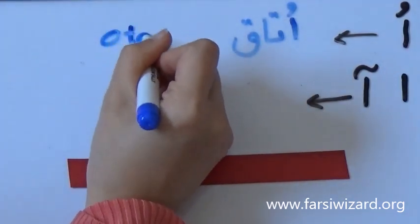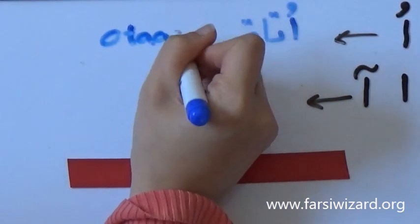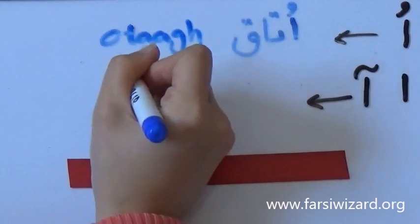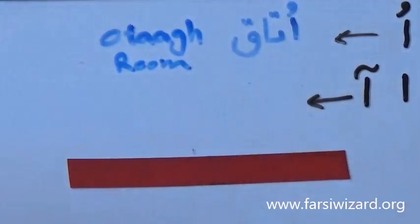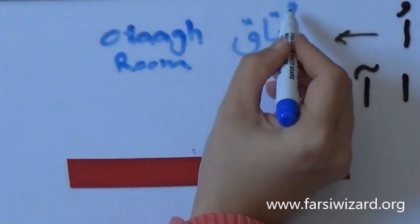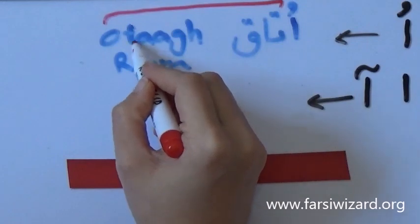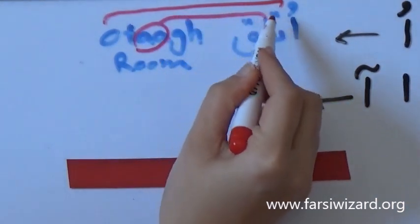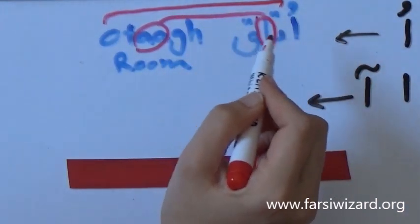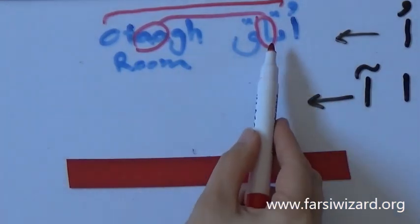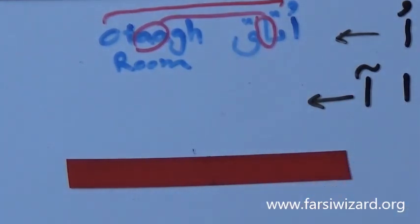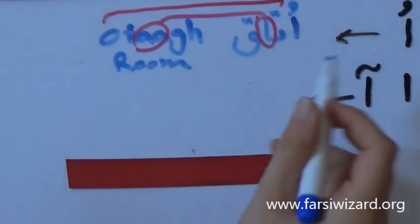The word Otaq means room in English. Now, here you can see that the first letter O has appeared at the beginning of the word. So we have O, and then we have another Aleph in the middle of the word, Otaq. So you see the second Aleph is the one that we will also focus on next. You can see that there is no hat because it has appeared in the middle of the word.